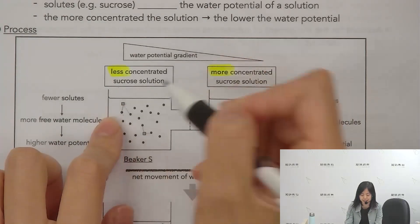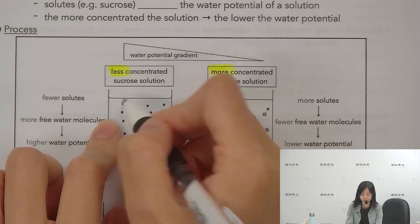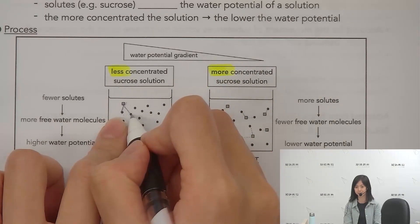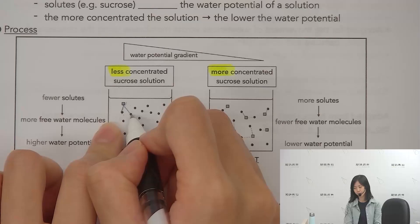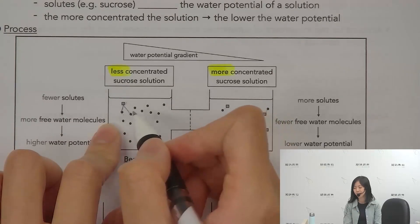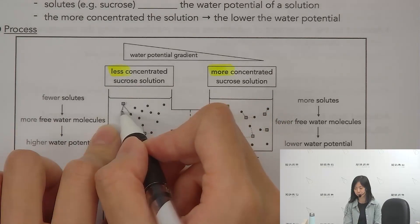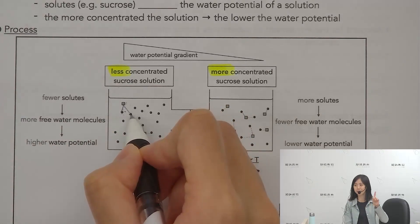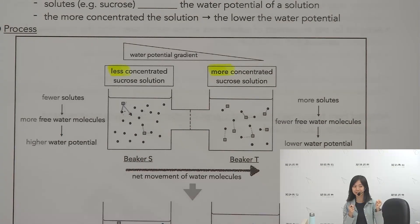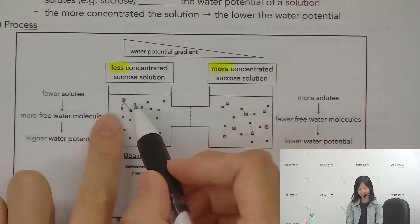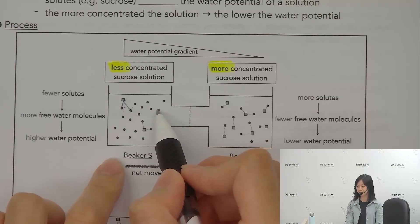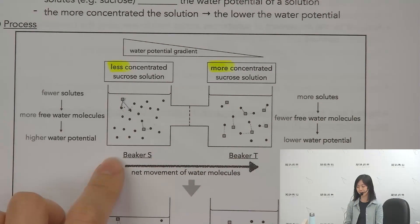You can imagine the sucrose molecule like chains holding the water molecules. So I want to ask: if the sucrose molecule can hold these water molecules, can those water molecules freely move? If you hold them, they will not be as free to move.